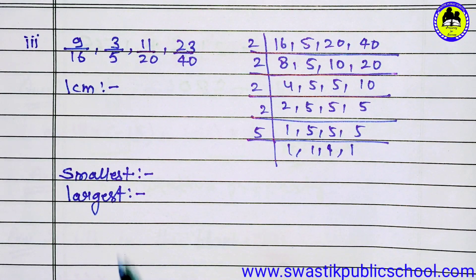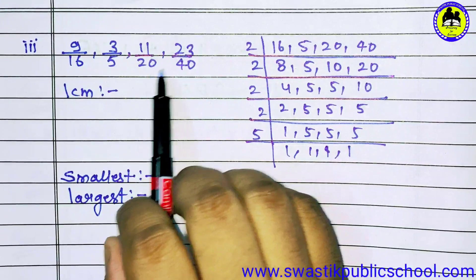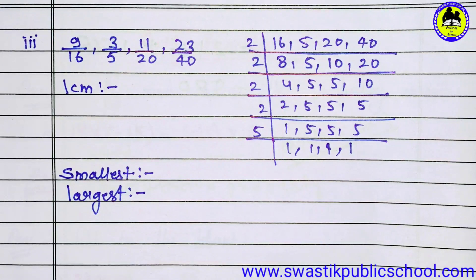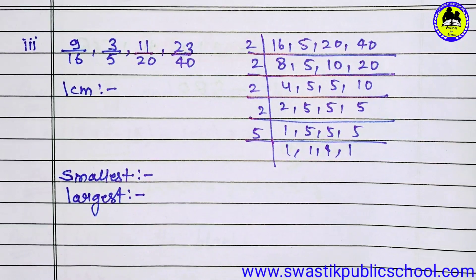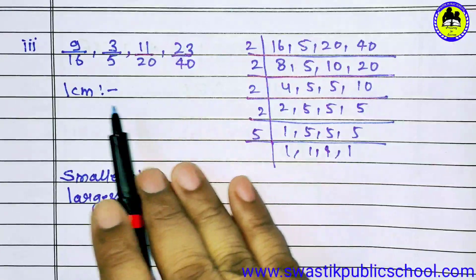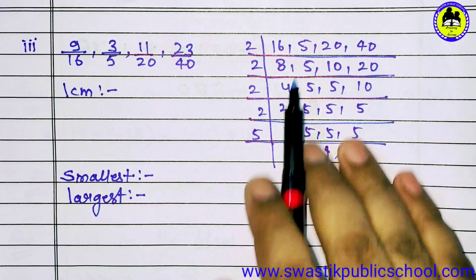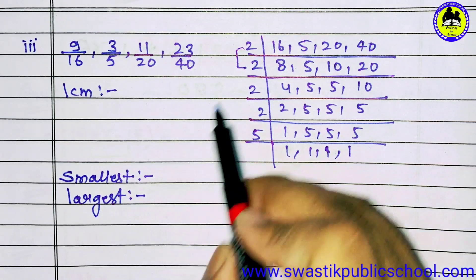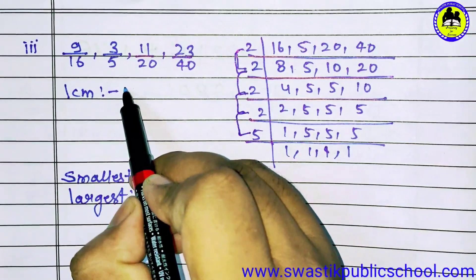In part C, children, when you see the fractions — 9 upon 16, 3 upon 5, 11 upon 20, and 23 upon 40 — you will notice all the denominators are different. So what will we do? First we will make all the denominators equal, meaning we will change them to like fractions. To make denominators equal, we will find the LCM of all the denominators. When we find the LCM, it comes to 80.